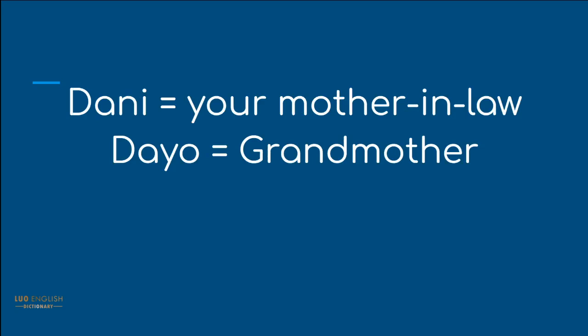And then D: Dani. So Dani can be twofold — Dani can be your mother-in-law, and Dani can be a grandmother. So if you say 'Macha Dani,' that means grandmother. But if you say 'Mindy Dani,' you can also be saying this is my mother-in-law.